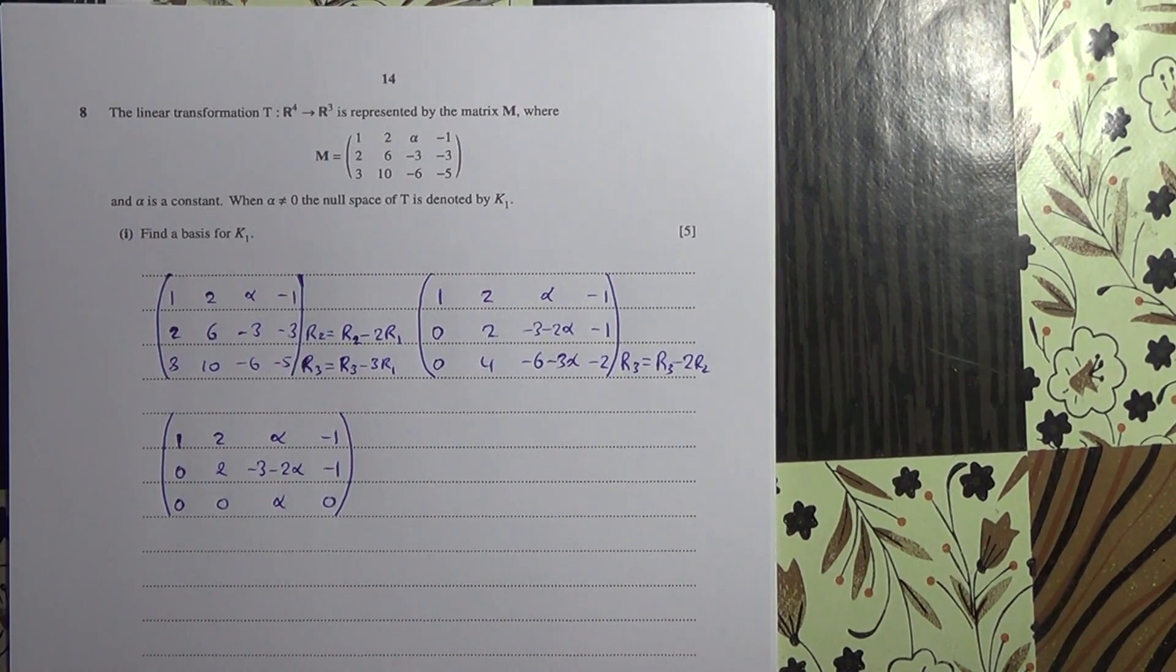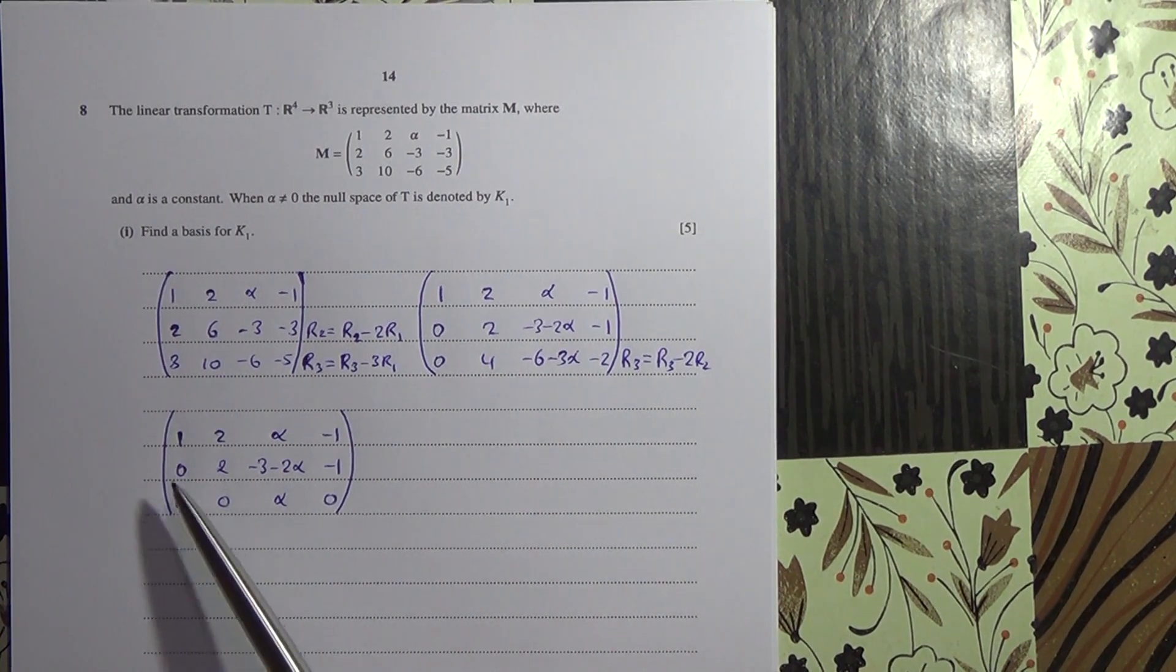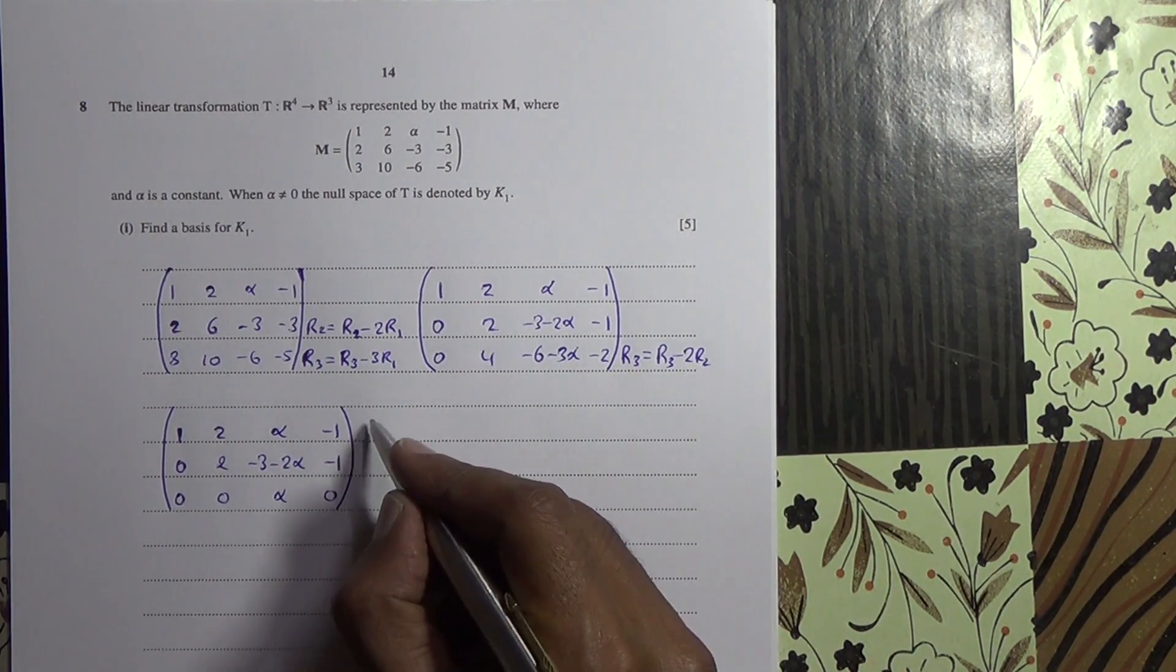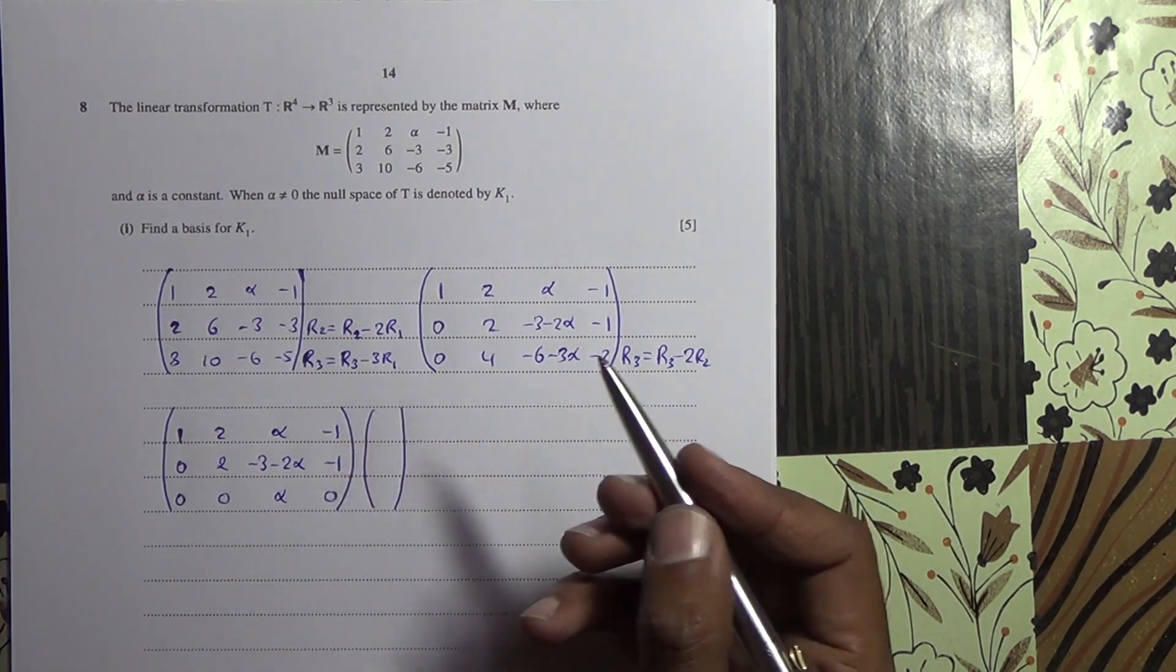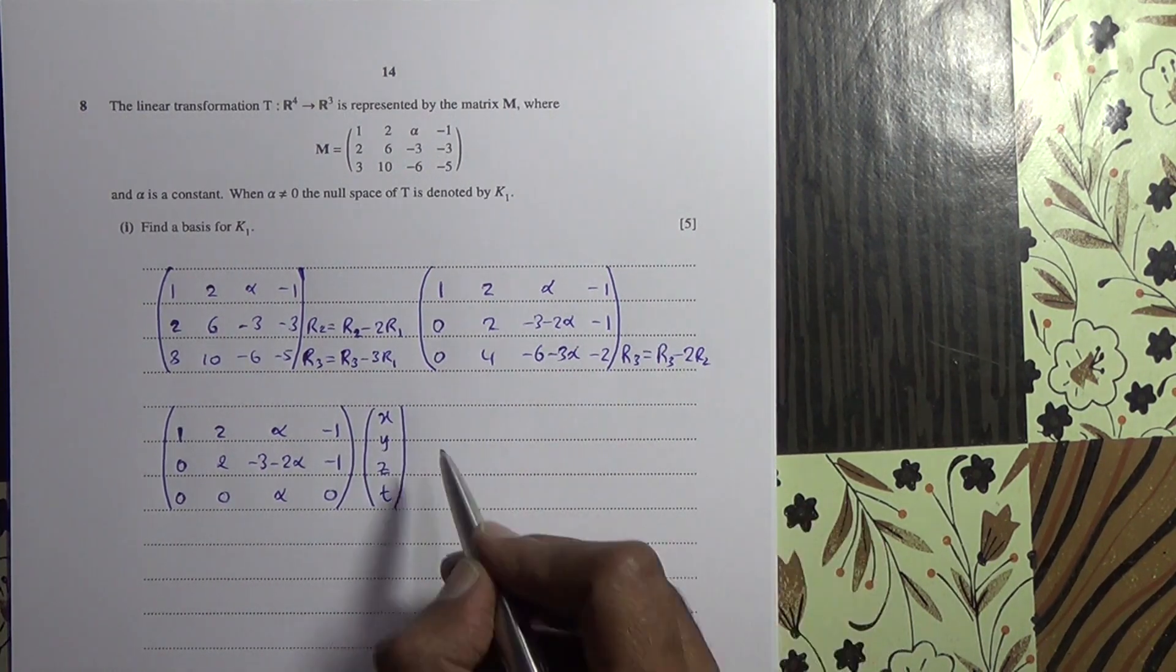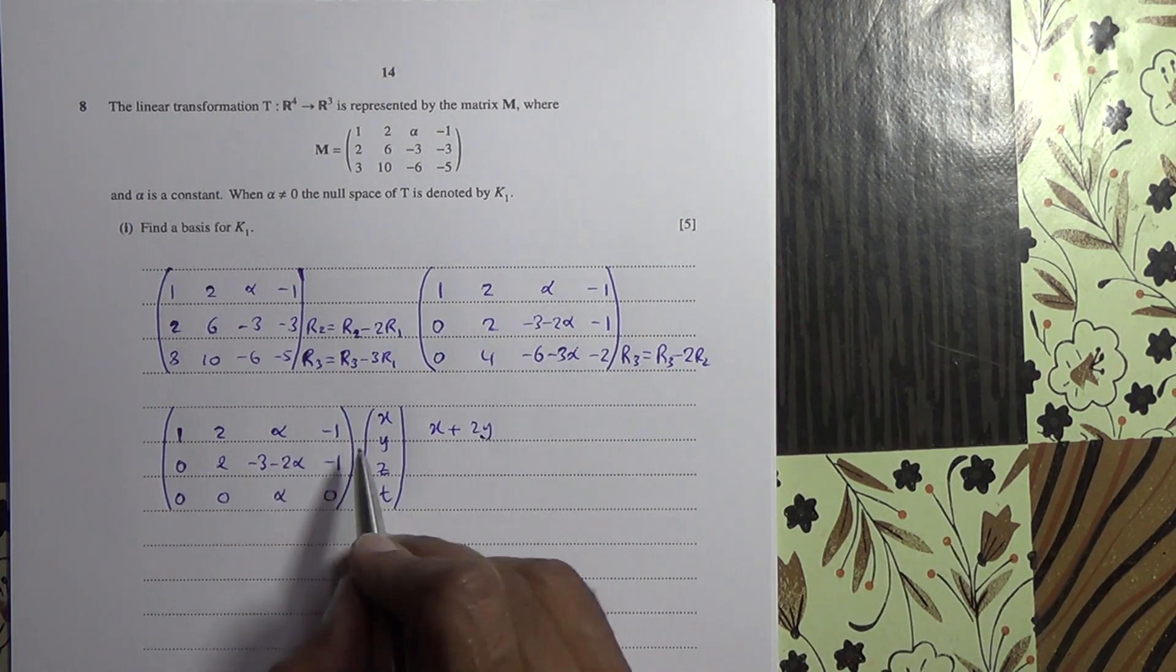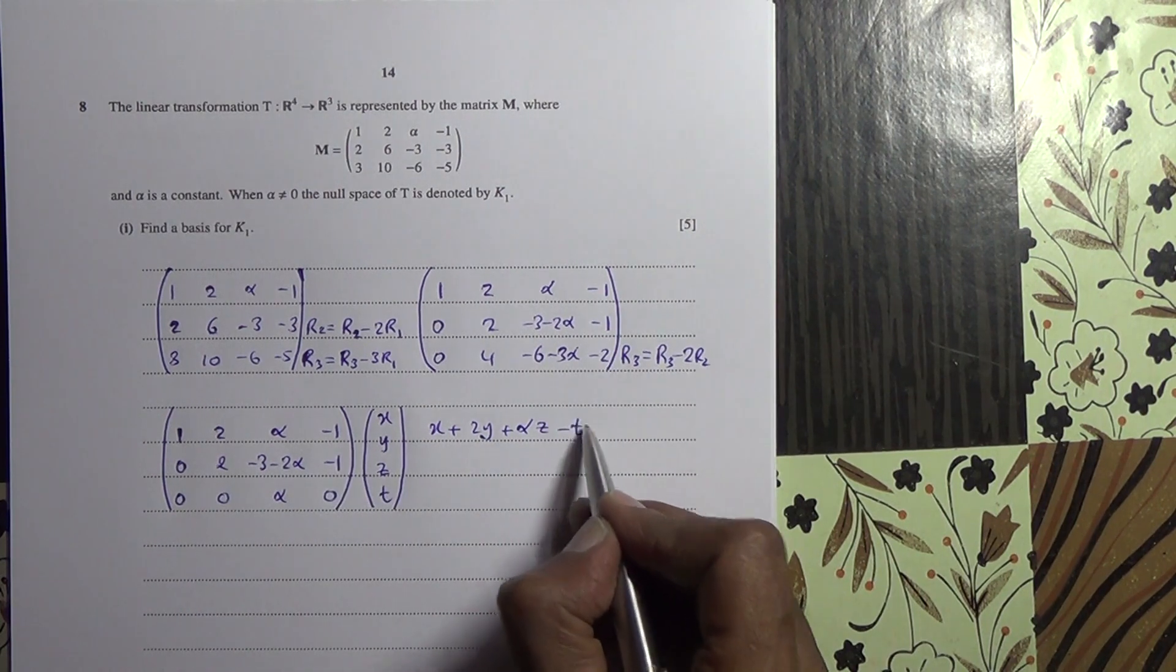Now after having performed the operations, here is what we've reached at. This is not the final RREF, I mean the reduced row echelon form, at least this is a row echelon form. Now what we're going to do is solve a system of equations. We're going to call it X, Y, Z, and T. If we do that, you multiply 1 times X is X, plus 2Y, then alpha Z, and minus T. It's equal to 0.